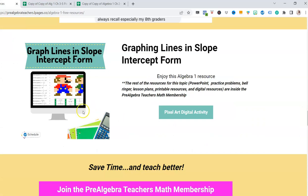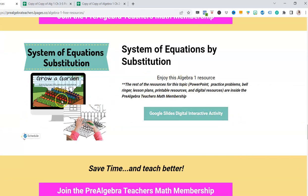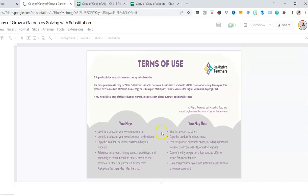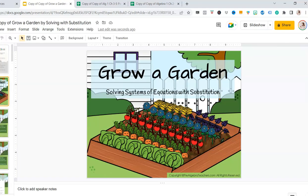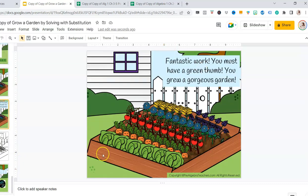Next we have Systems of Equations by Substitution, and this is our Grow a Garden activity. This is a Google Slide activity, and students will go through each activity or each question. If they get it wrong, the slide will pop up as 'Oops, try again,' and if they get it right, they will move into the next question. The whole point of this is to answer each question so that they can grow a garden. There's also a coloring page for your students as well.